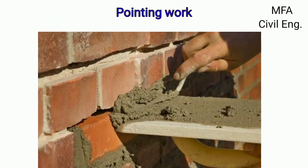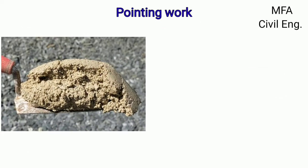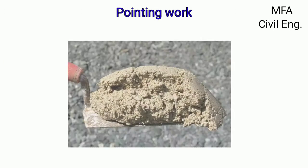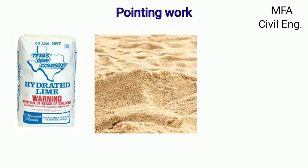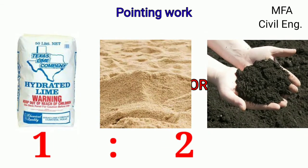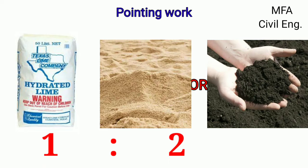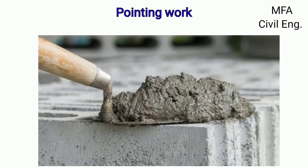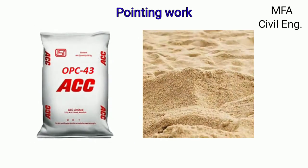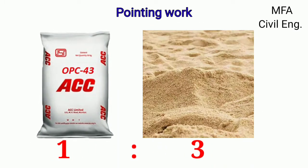The pointing work can be done with lime mortar or cement mortar. For lime mortar, the proportion of constituent materials like lime and sand or surkhi should be 1:2, that is one part lime and two parts sand or surkhi. For cement mortar, the proportion of cement and sand should be 1:3, that is one part cement and three parts sand.